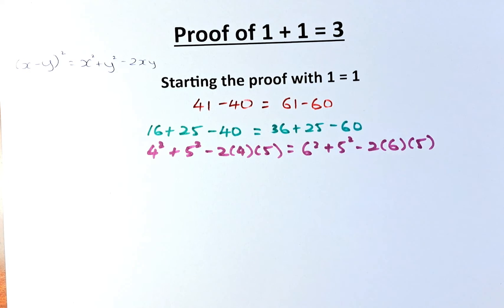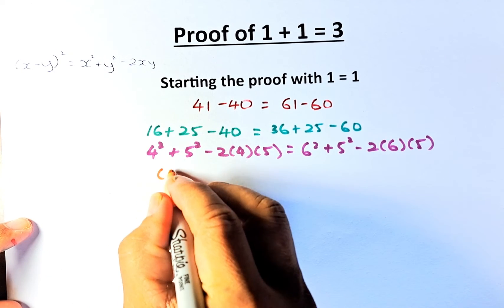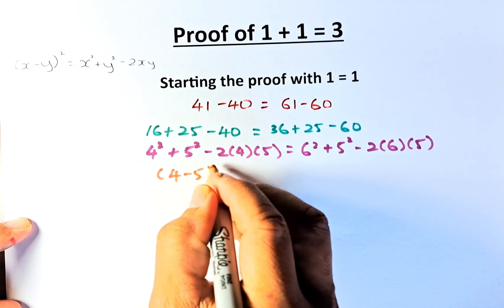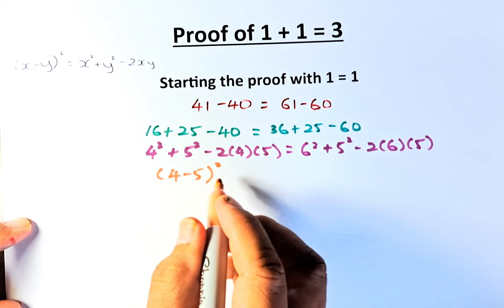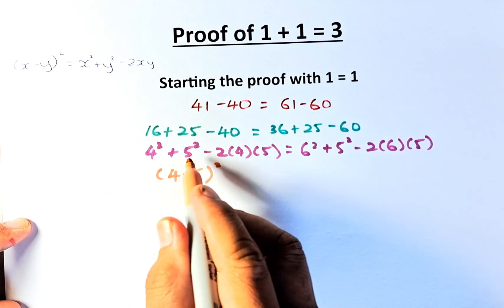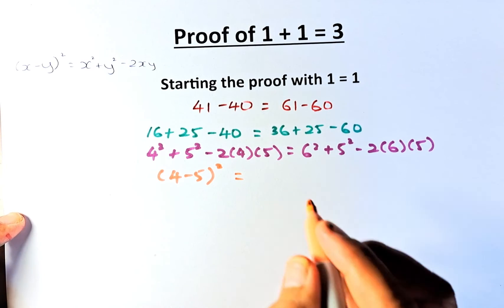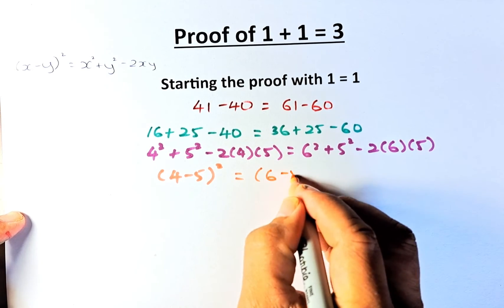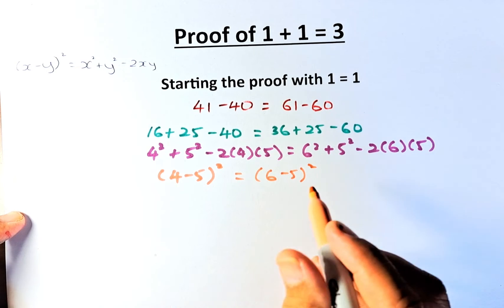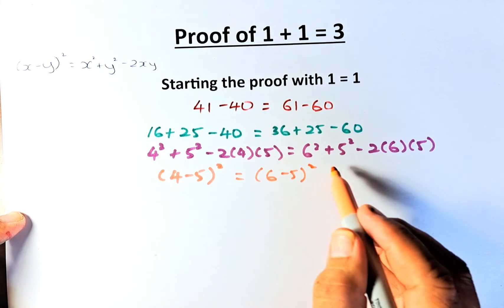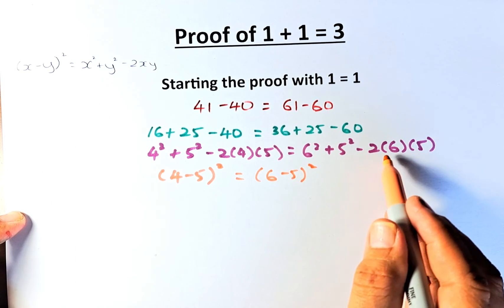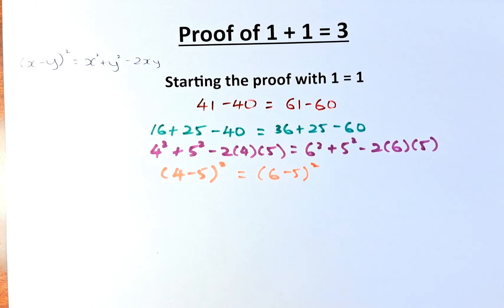So that becomes 4 minus 5 squared. X minus y squared equals x squared plus y squared minus 2xy. On the other hand, on the right hand side, it's going to be 6 minus 5 squared because 6 is the x squared plus y squared minus 2xy. That is how we get it.